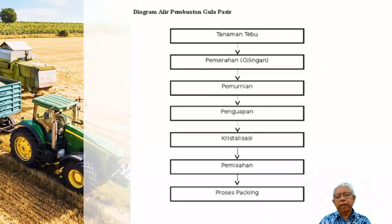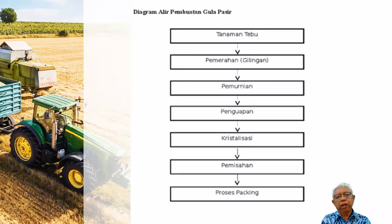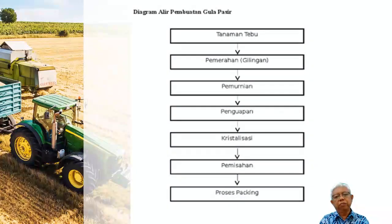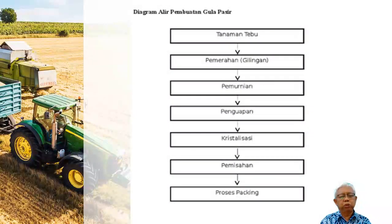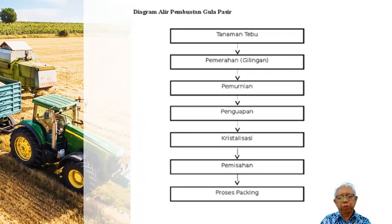Jadi dari kebun, kita potong-potong, kita kecilkan ukurannya, kemudian masuk ke unit ekstraksi atau unit pemerahan atau dikenal dengan stasiun gilingan atau milling station. Ada pemurnian — dalam artian untuk memisahkan kotoran dan menjernihkan nira yang kita hasilkan. Kemudian ada proses penguapan, proses kristalisasi, kemudian pemisahan antara kristal dengan molasis, dan selanjutnya adalah packaging atau pengemasan. Ini prosesnya bukan suatu proses yang rumit — cukup simple, cukup sederhana.